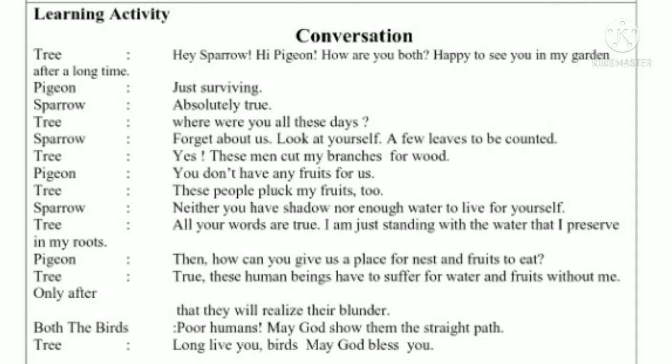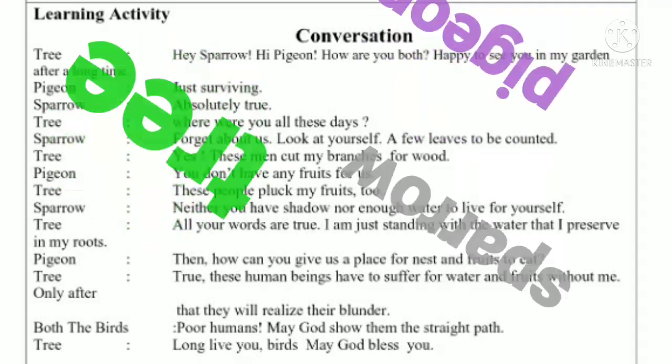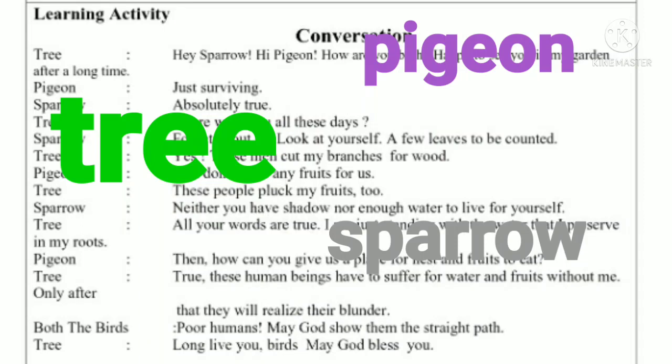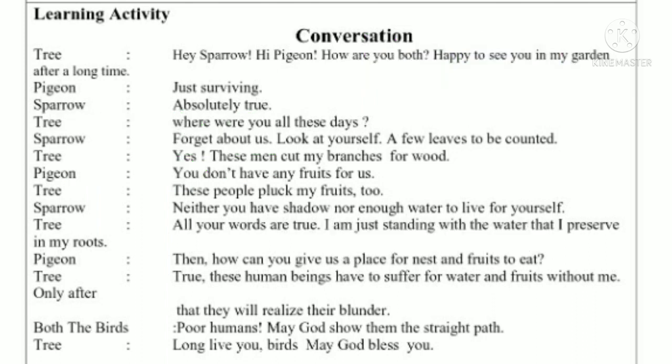There are three roles. Imagine the characters because a Tree is speaking to a Pigeon and a Sparrow. So the characters are Tree, Pigeon, and Sparrow. Consider them as human beings as they are speaking. This is personification — play the roles and enjoy it. After completing this activity, listen to the extension activity.